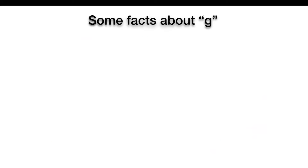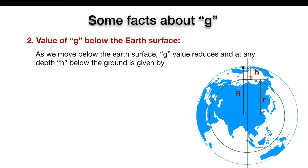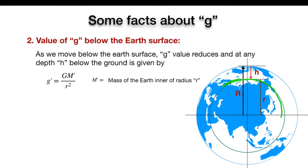Similarly, if we go below the Earth's surface, the value of g also changes. As we move below the surface, the value of g reduces. At any depth h below the ground, the value of g can be given by the formula g' = Gm'/r². Here, small r is the distance of the point from the center, and m' is not the mass of the whole Earth but the mass of the inner sphere of radius r only.